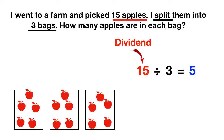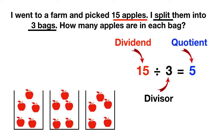The number that I'm dividing by — this three, which represents the number of bags or groups that I have — is called the divisor. And finally, the five, which is the answer, or the number of apples in one bag, is called the quotient.